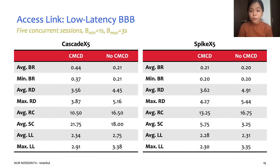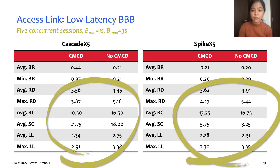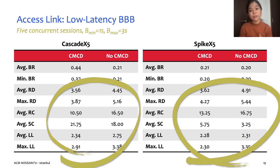Finally, for our third test scenario investigating the effect on low-latency streams, our results show that on top of the rebuffering performance improvements, the latency performance also improved with the use of CMCD. You can see the average live latency and max live latency metrics here. Overall, we can conclude that the use of CMCD with our buffer-based bandwidth allocation scheme has shown promising results, with notable improvements in rebuffering and latency performance.